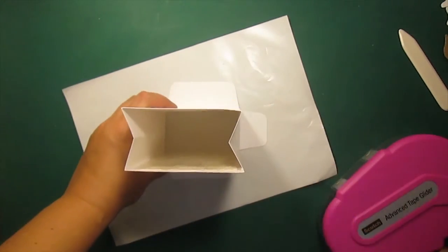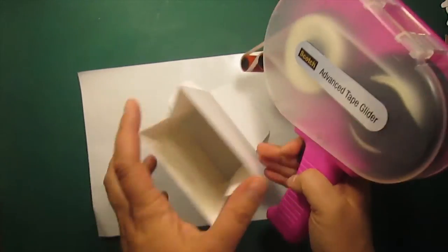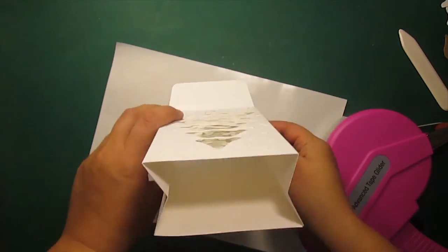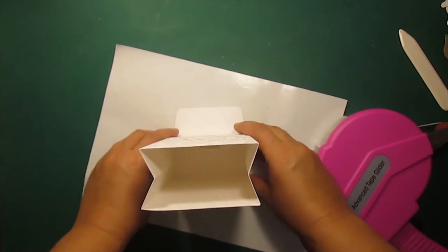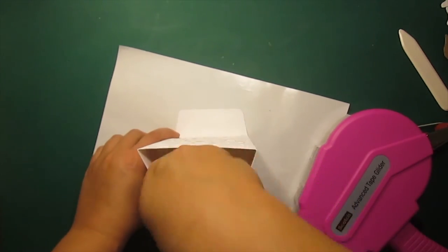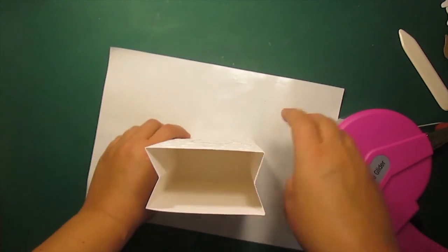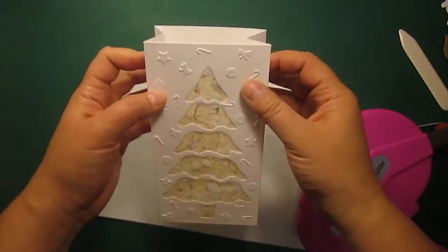After that I'm adding adhesive to the three bottom flaps leaving one of the larger flaps clean. I'm curling the flaps inside. The one with no adhesive on it is going on top and then I'll be pressing them down.